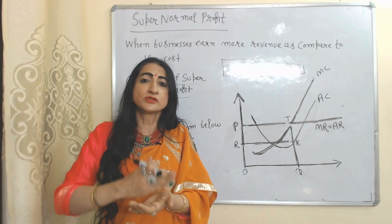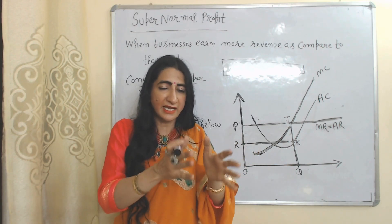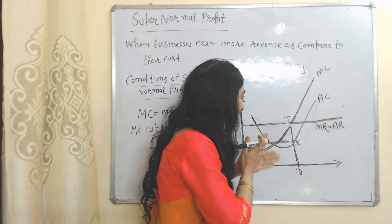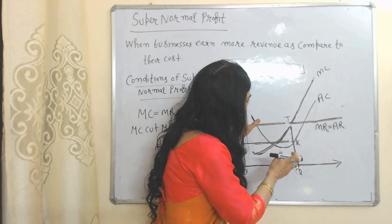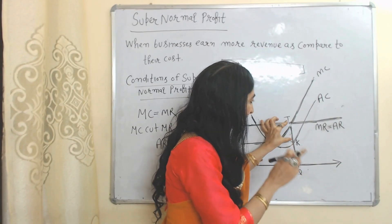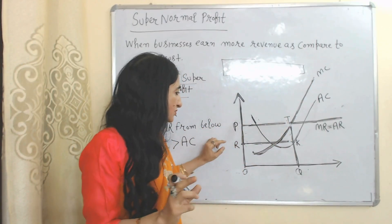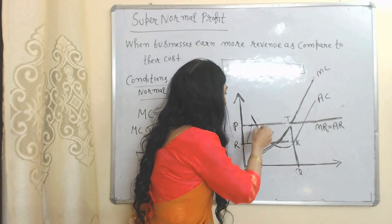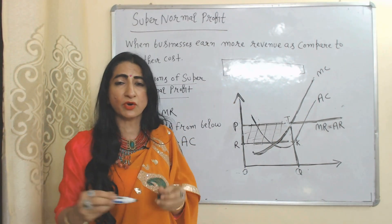Super normal profit is the difference between AR and AC. AR means average revenue, AC means average cost. So the difference between TQ and KQ — which equals TK — will be called per unit super normal profit. And this whole area RPTK will be called total super normal profit which the perfect competition firm receives during the short time period.